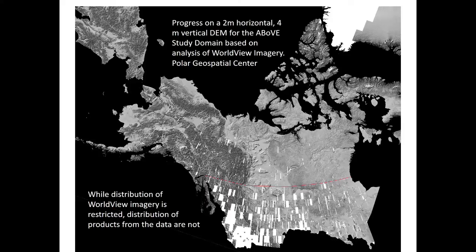Here's a data product being produced by NASA's ABOVE program. We're working with the Polar Geospatial Center at the University of Minnesota, who is compiling WorldView data sets. They're using stereographic techniques to generate a two-meter horizontal resolution DEM product for the entire ABOVE study domain. It has a four-meter vertical resolution uncorrected; with ground control points and additional processing, you can get that vertical resolution a bit better. This data set will be available to the ABOVE science team, of which members from Global Water Futures and CCRN are part.